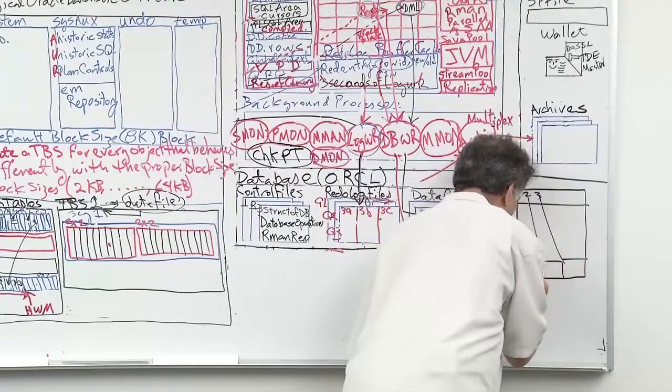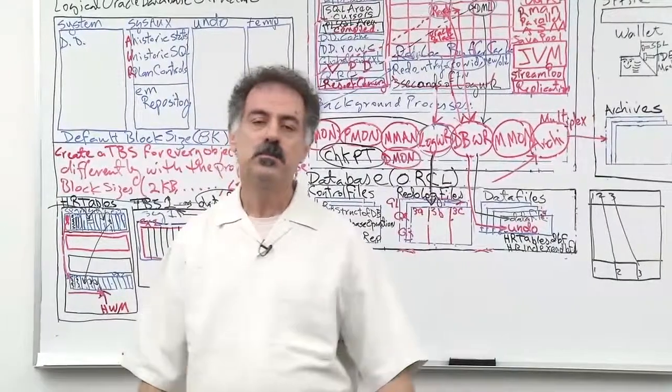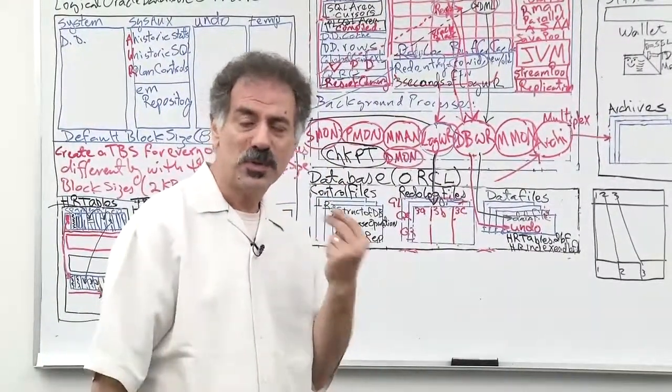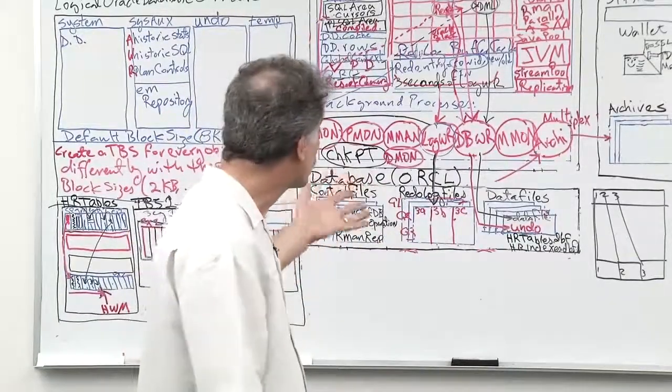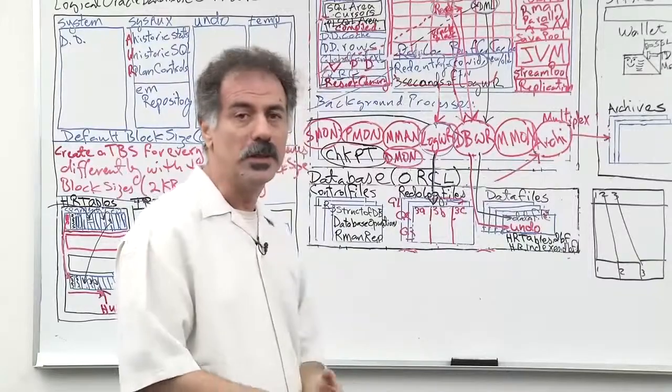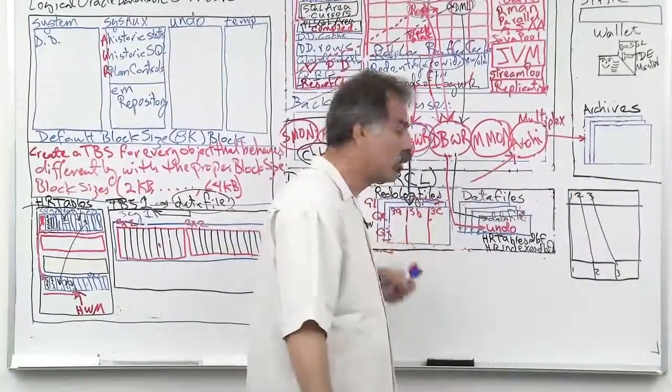So now we have two types of corruptions that we must manage within our database. Number one: what if I have a physical problem on the disk? Let's say there's a bad sector on the disk and we have written blocks on that sector. Now we want to read, but of course the sector is bad and we cannot read the block.